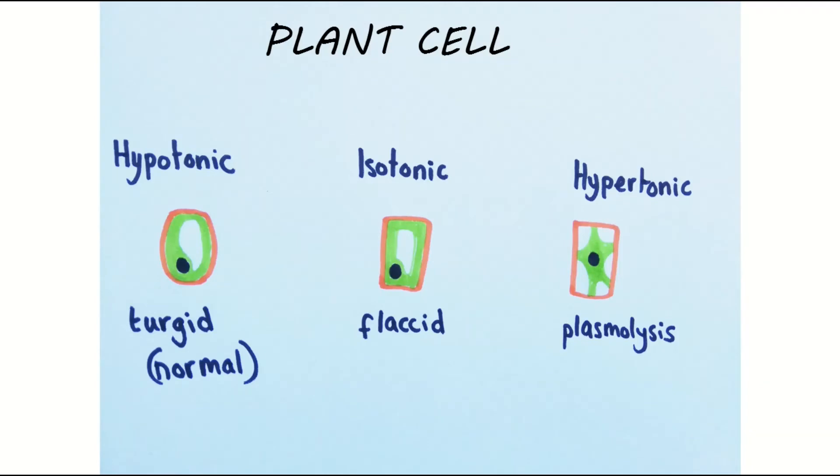When plant cells are surrounded by a hypotonic solution, water moves into the cell by osmosis, and this causes the cell to swell and become turgid. This is a plant cell's normal state, and the cell wall prevents the cell from bursting.